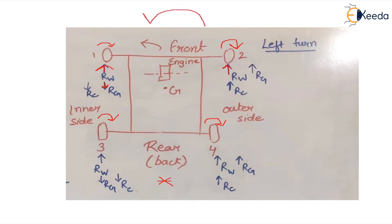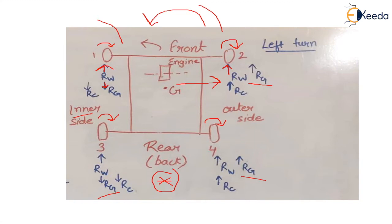By anti-clockwise direction we mean that the reaction on the inner wheels will be in the downward direction and for the outer wheels it will be in the upward direction. The third component is due to the centrifugal couple. The centrifugal force acts outward, and viewed from the rear end it creates a couple in the clockwise direction, so its reaction is anti-clockwise — meaning downward for inner wheels and upward for outer wheels.